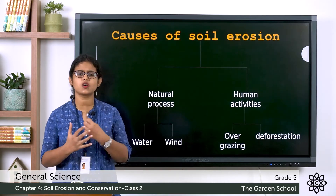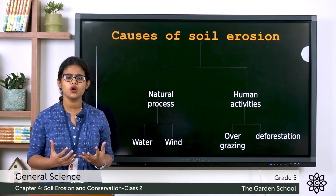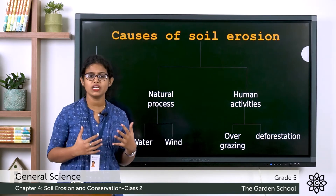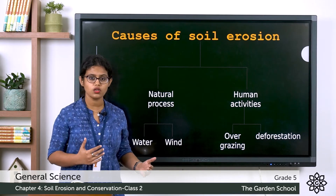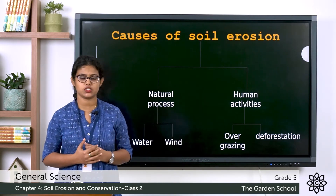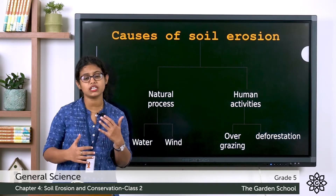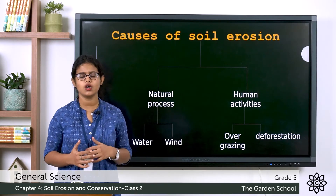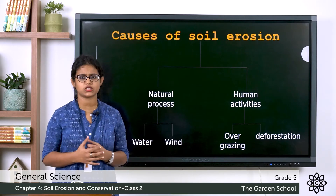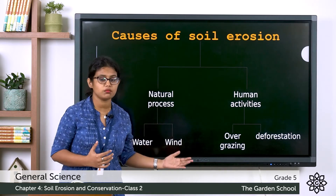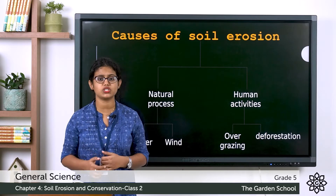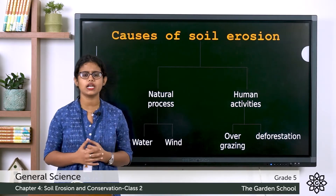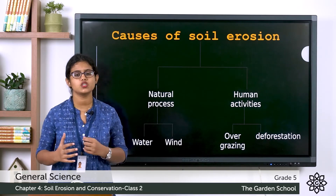So what are the causes of soil erosion? Soil erosion can happen due to natural processes or due to human activities. The natural causes include water and wind, while human activities such as deforestation and overgrazing can also cause soil erosion. Now we are going to learn about these causes in detail.